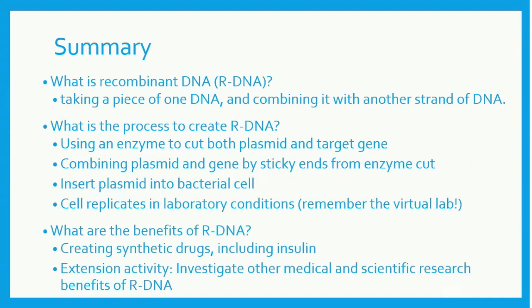Let's review what we learned. Recombinant DNA is DNA that has been combined with another piece of DNA. The process first involves using an enzyme to cut the plasmid and target gene, then create sticky ends. The sticky ends of both parts combine, forming a plasmid that has recombinant DNA. The plasmid is inserted into bacterial cells, where the cell can replicate — as seen on the virtual lab bench.